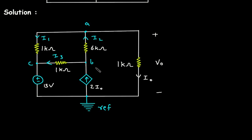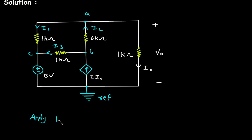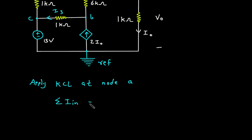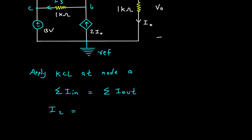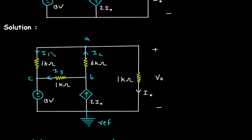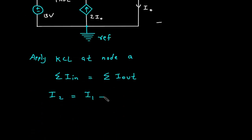Now we will apply KCL — that is Kirchhoff's current law — at node A. According to KCL, summation of all the current entering a node is equal to summation of all the current leaving the node. So here, I2 is the entering current, and I2 is equal to the leaving currents I1 plus IO. I1 is leaving from here, and IO is also leaving from here, so it will be I1 plus IO.